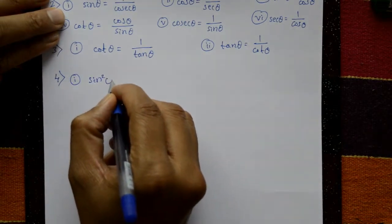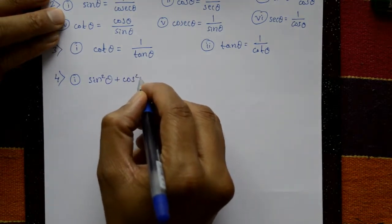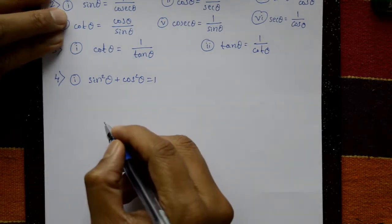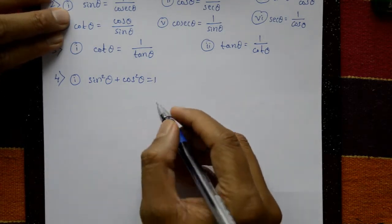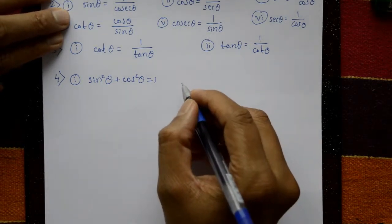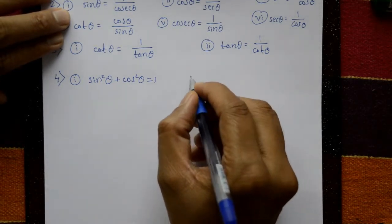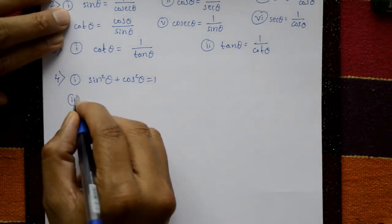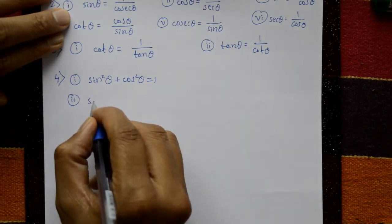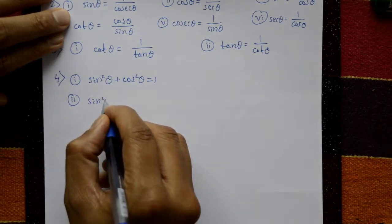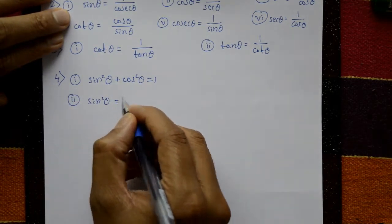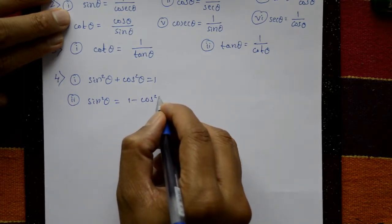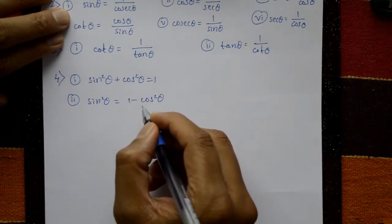First Pythagorean identity: sin square theta plus cos square theta is equal to one. Second one: sin square theta is equal to one minus cos square theta, by shifting cos square theta to the right-hand side.